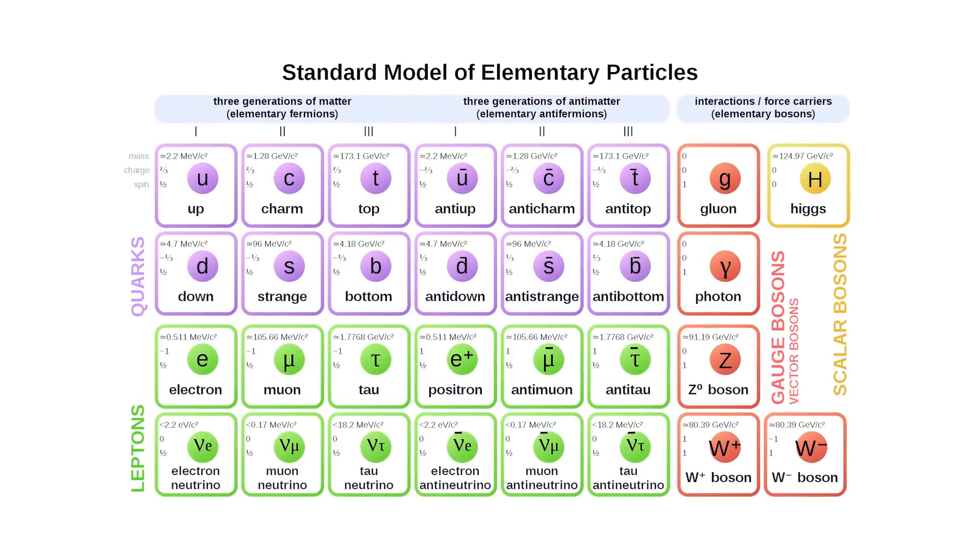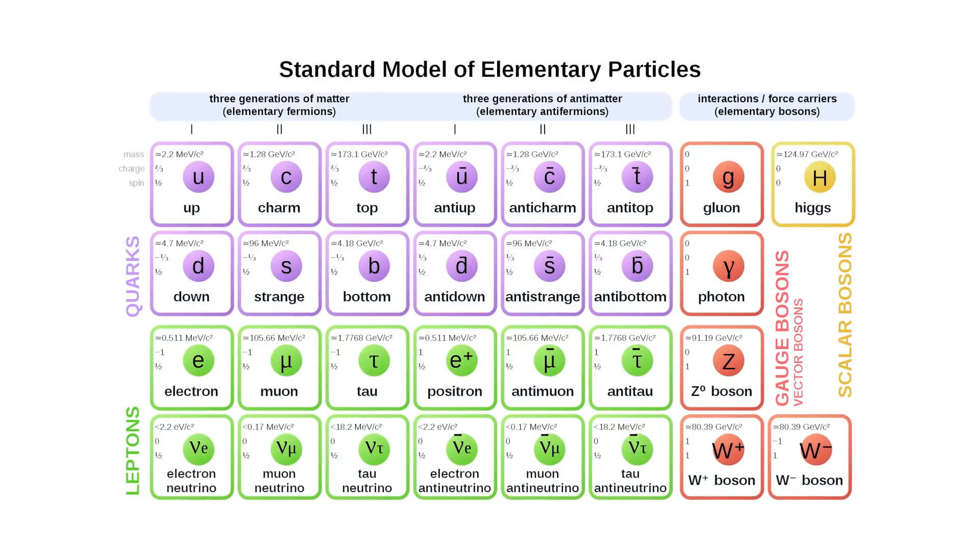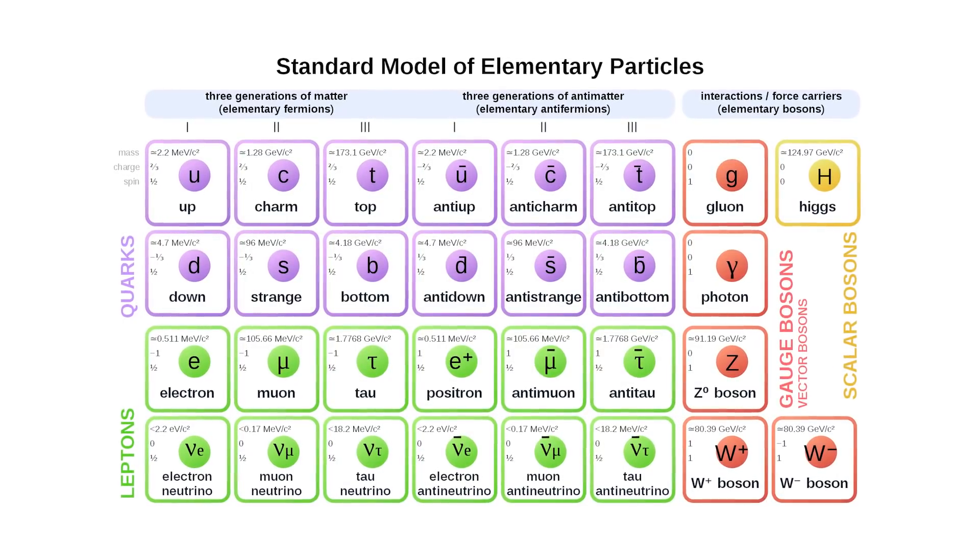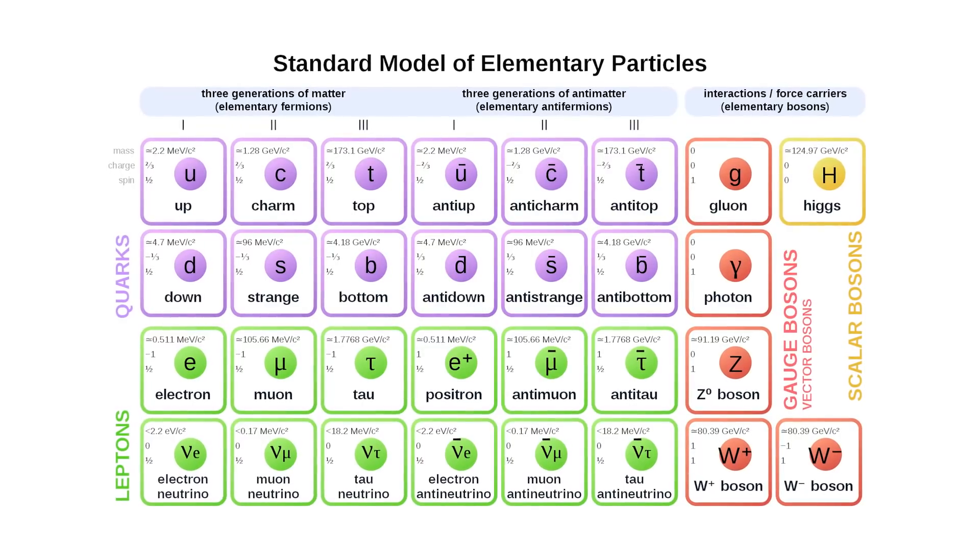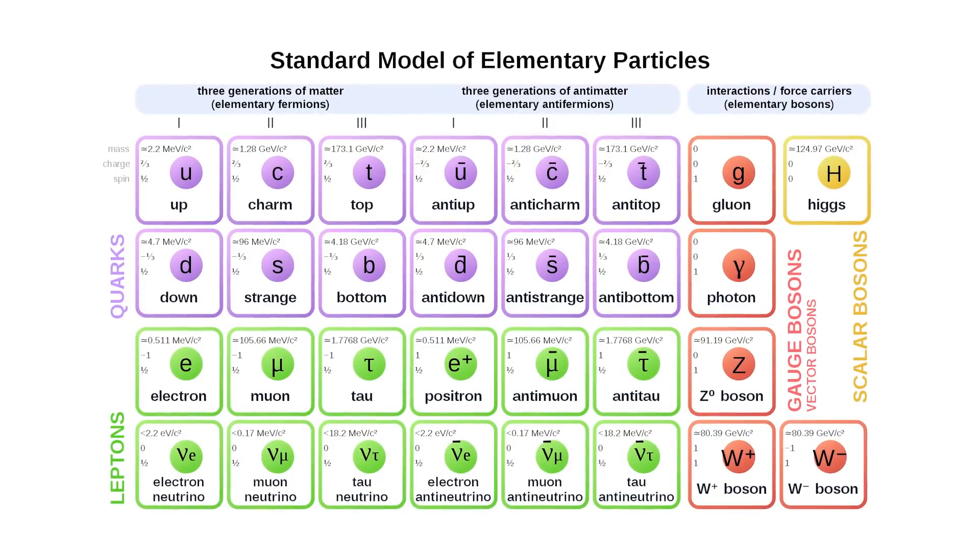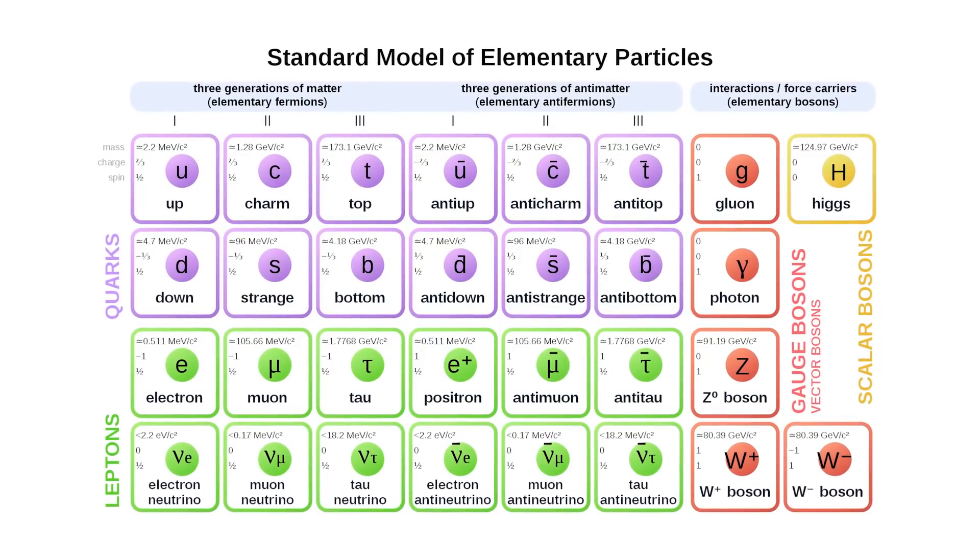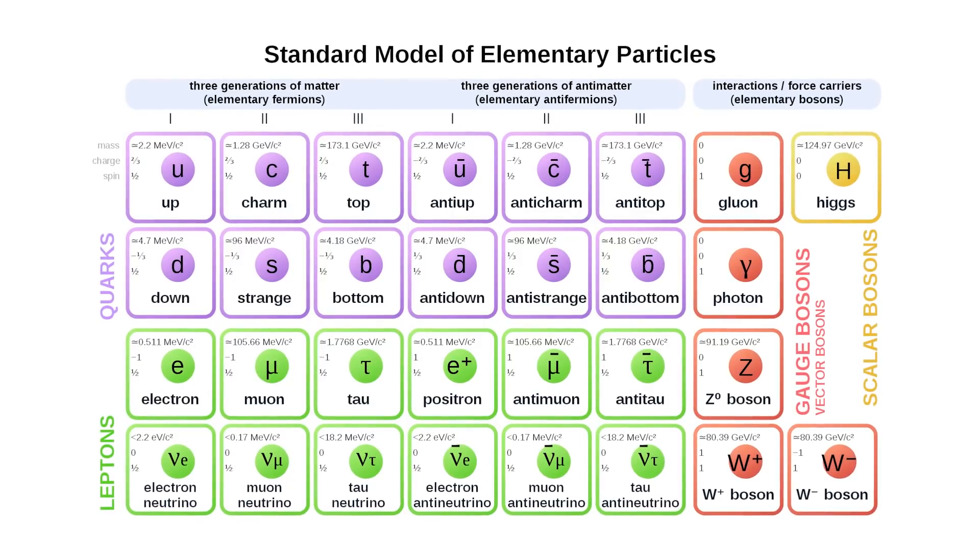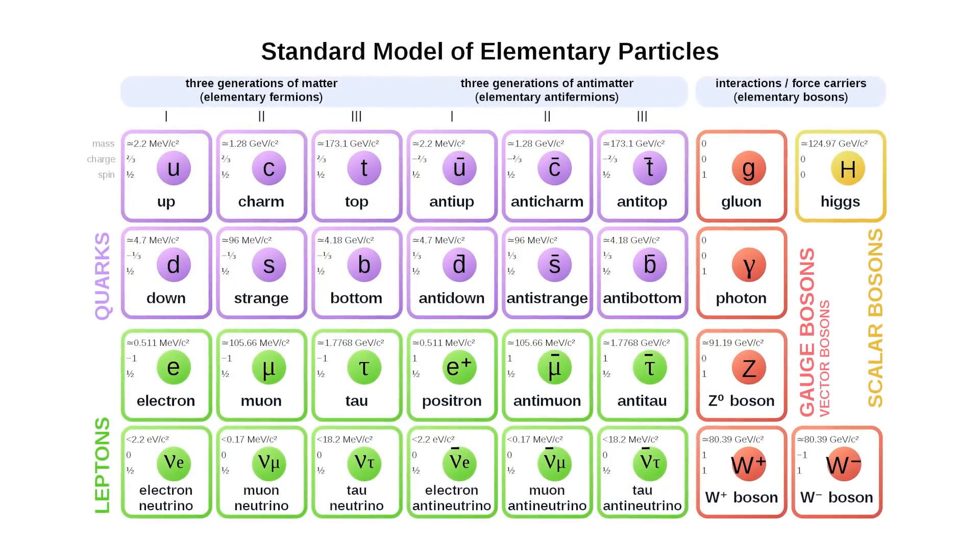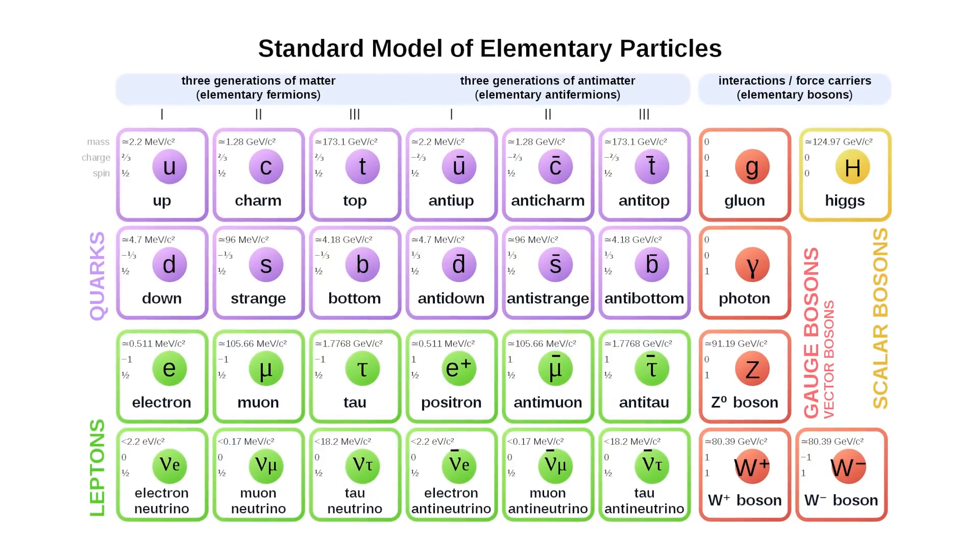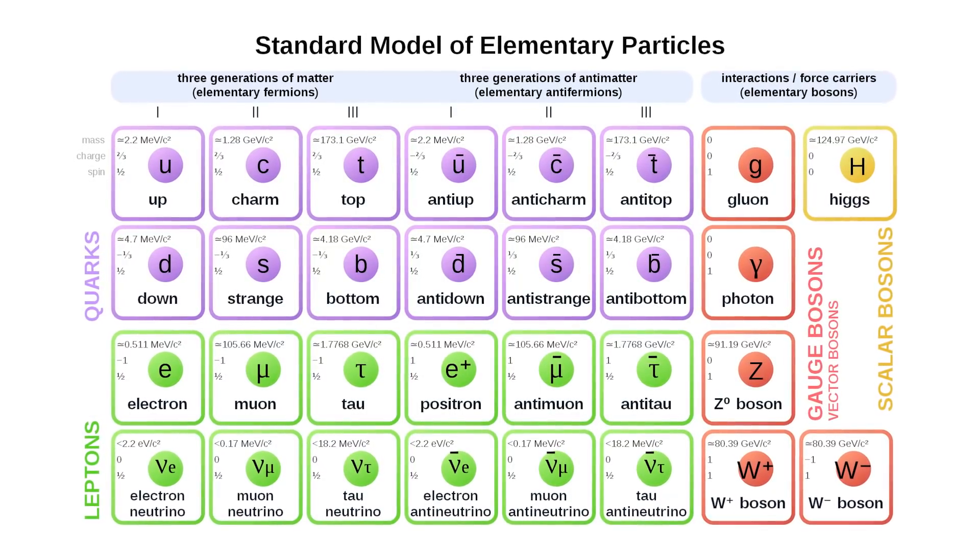Instead of the weak and electromagnetic bosons W+, W-, Z0, Gamma, the first three of which are quite large and the fourth of which is massless, we have four new bosons for the electroweak force W1, W2, W3, B, all of which have no mass at all.